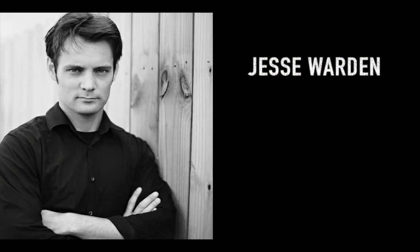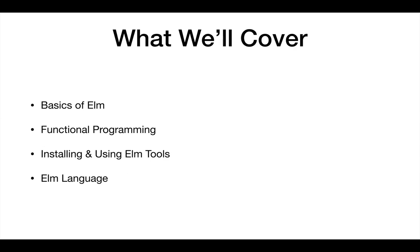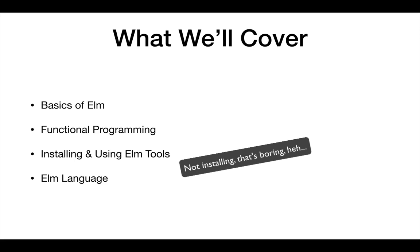My name is Jesse Warden. I'm a software developer at Capital One — mainly a Node.js and React guy. I occasionally maintain some Go, but my passion lies in building front-end interfaces and lightweight APIs in Node. What we'll cover today is the basics of Elm and a lot about functional programming, because to appreciate what Elm offers, you really need an understanding of functional programming first.